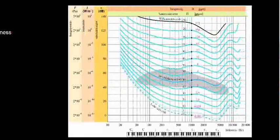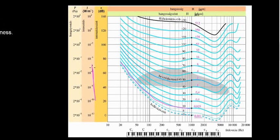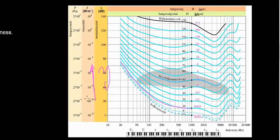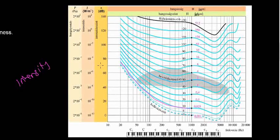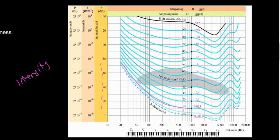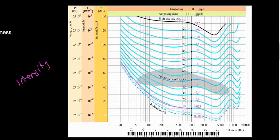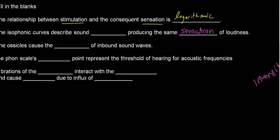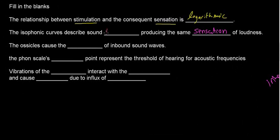If we're producing the same sensation, what is different? The difference is in the Y scale — the intensity of sound. For different intensities I can have the same level of loudness on the same isophonic curve. So the isophonic curves describe sound intensities producing the same sensation of loudness.